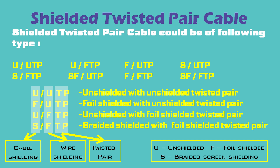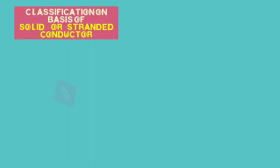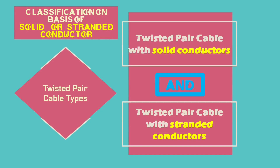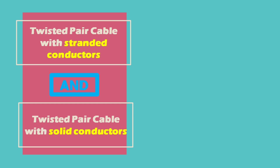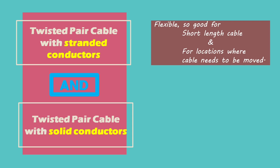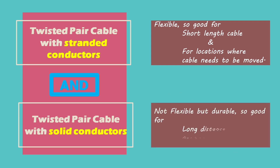A twisted pair cable can also be classified on one more criterion: solid or stranded wires inside the cable. Both have different advantages. For short-length cables that may need to be moved, stranded cable is preferable as it provides flexibility. Solid cable is more suitable for long-distance permanent installations — it is less flexible but more durable due to its solid nature.